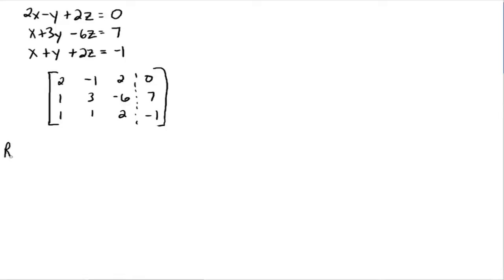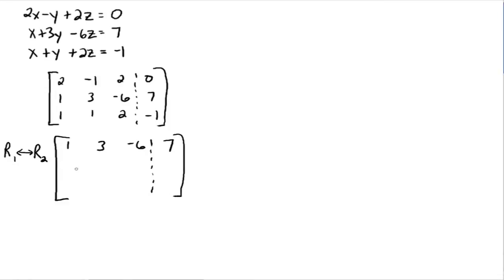Here's the notation to show that rows one and two are switching places. Row one becomes one, three, negative six, seven. Row two becomes two, negative one, two, zero. And row three stays one, one, two, negative one.